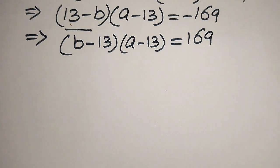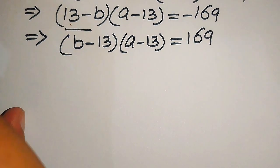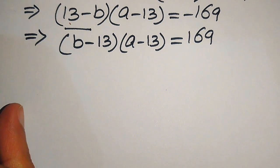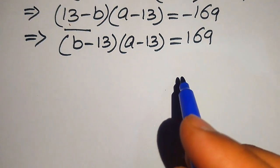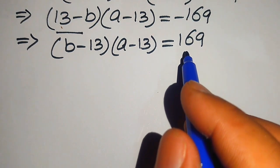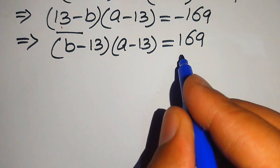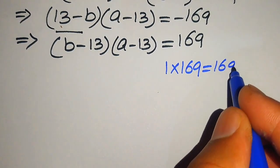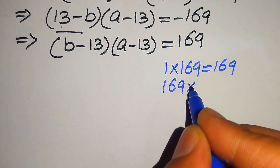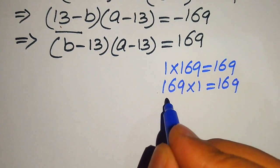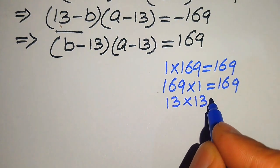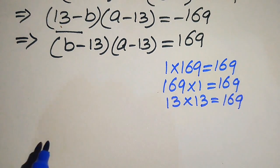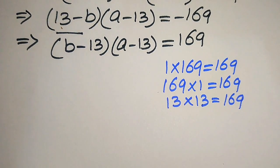On the left side we have two factors multiplied together, and on the right side we have 169. We need to find pairs of positive numbers whose product is 169. The options are: 1 times 169 equals 169, 169 times 1 equals 169, and 13 times 13 equals 169. So we have three cases.